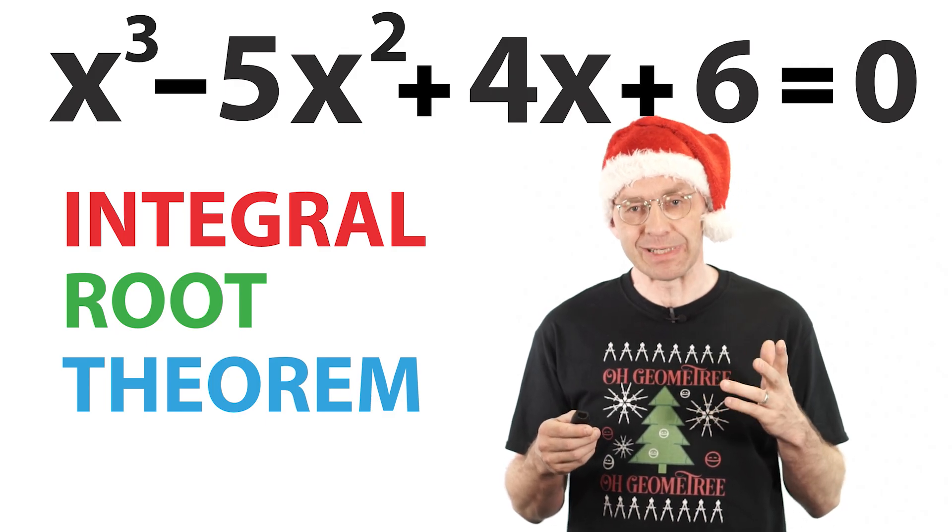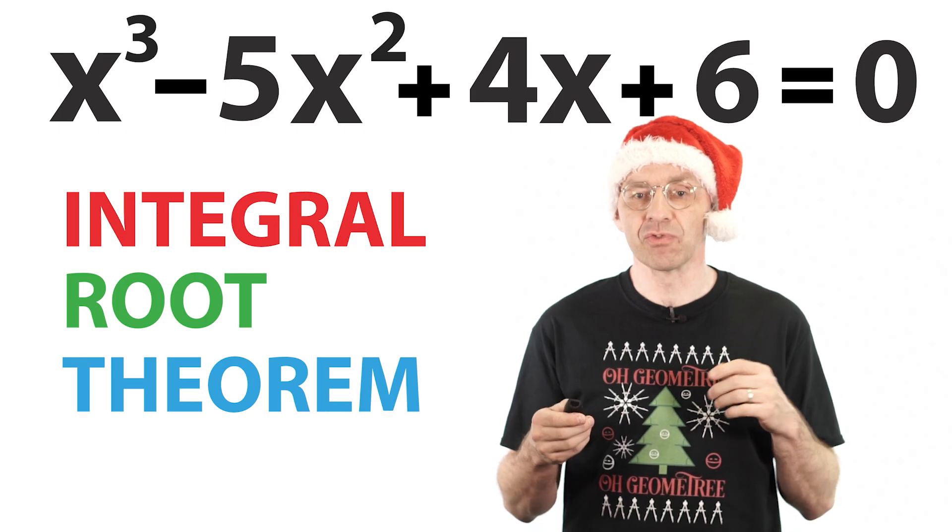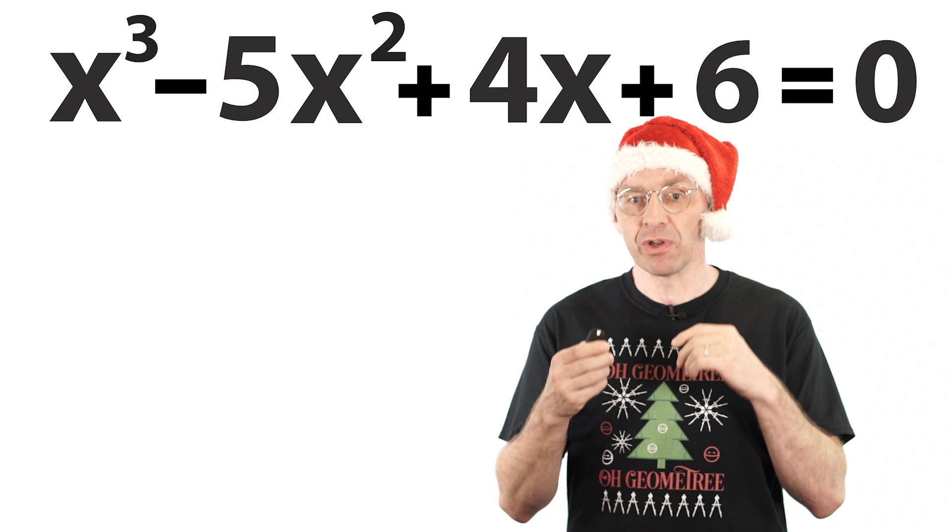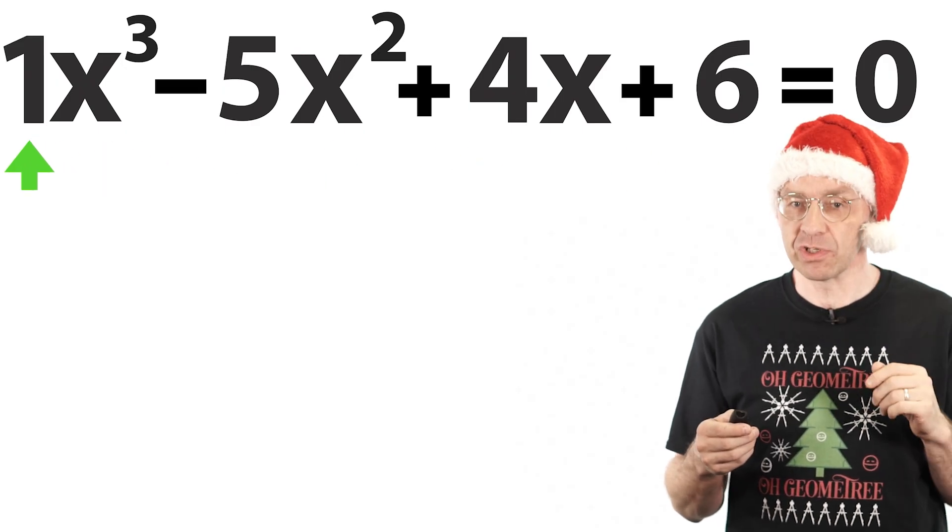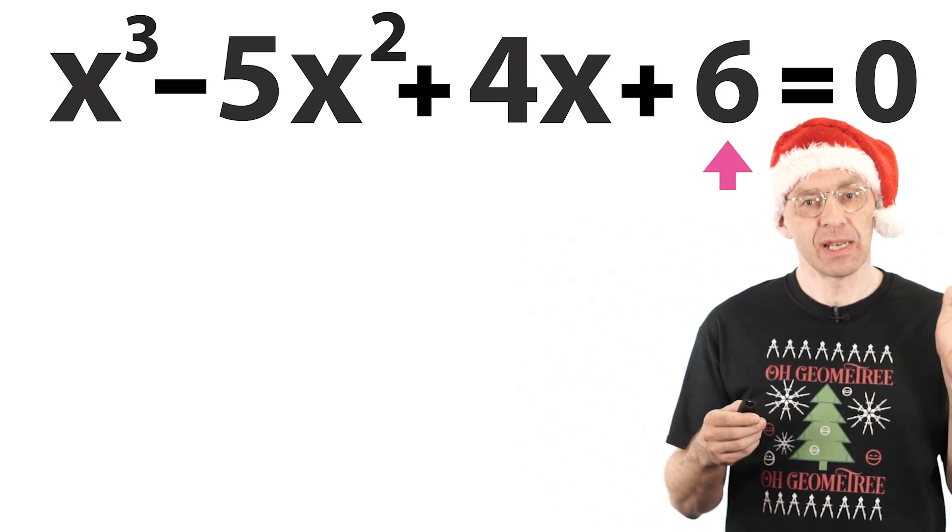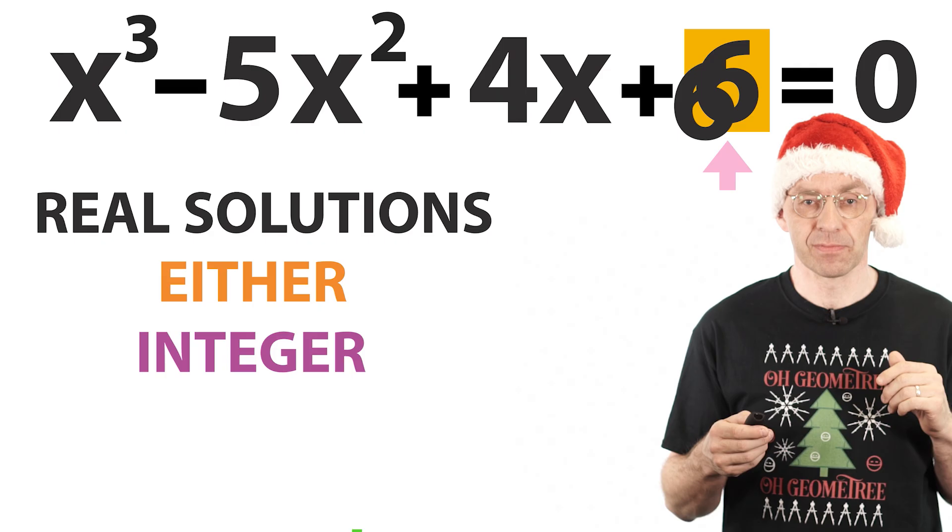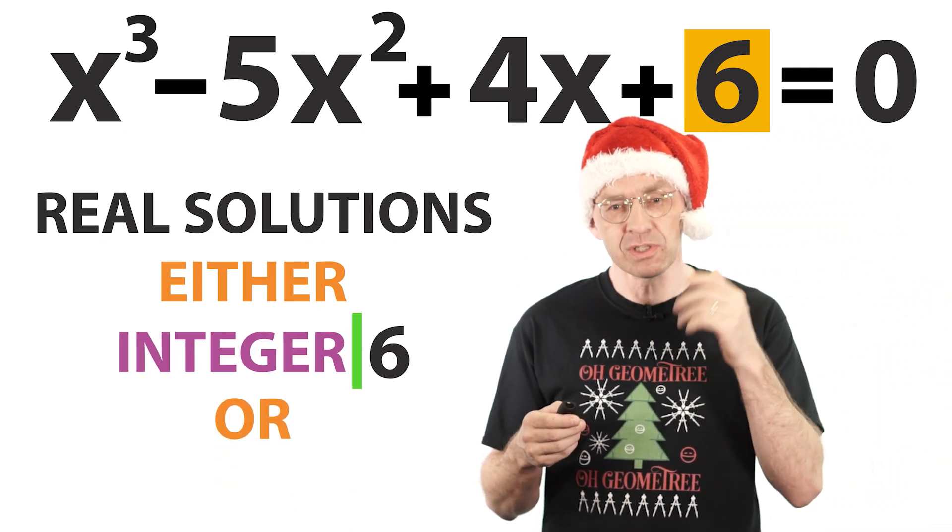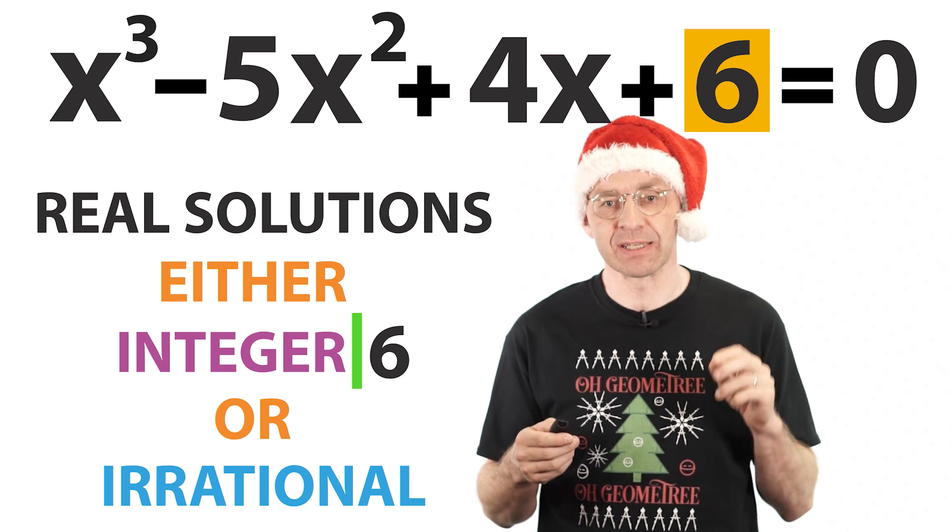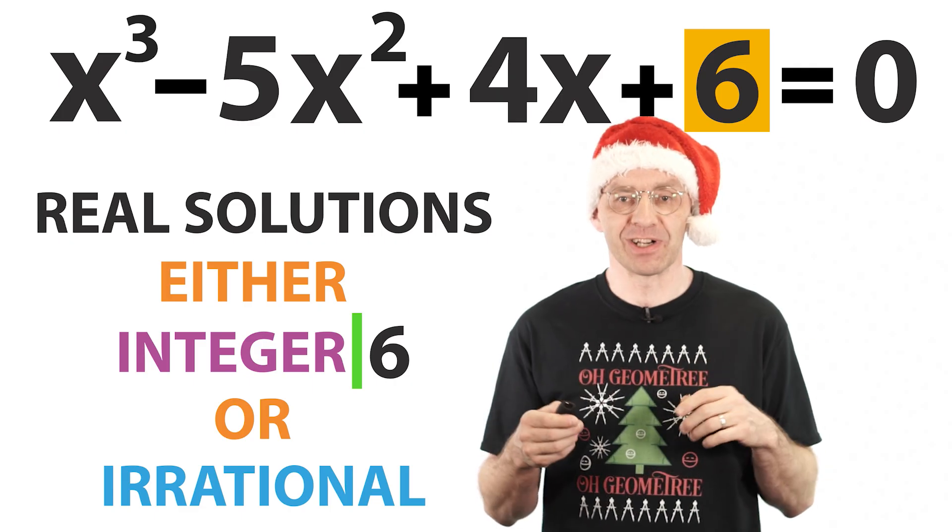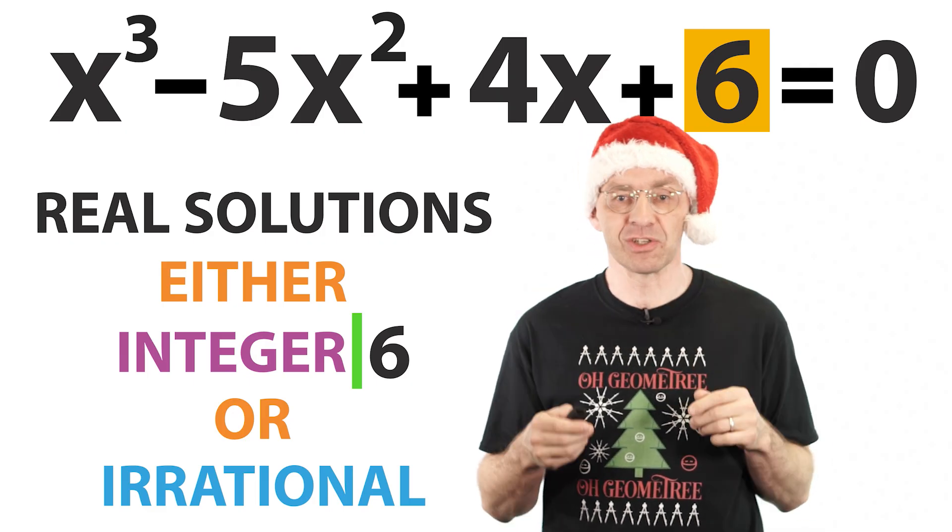What does any of this have to do with irrational numbers? Well, if you actually state this trick as a proper theorem and not as the contrived guessing game presented in schools, then the integral root theorem runs like this. Given a polynomial equation with integer coefficients and, very important, leading coefficient 1 and, also very important, non-zero constant term, then any real solution of this equation is either an integer that divides the constant term, or the solution is an irrational number.